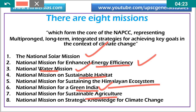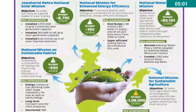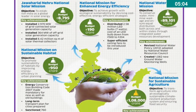If there is an essay topic related to climate change, you can design your essay body based on this structure — eight paragraphs covering strategies and problems — to complete your essay in a meaningful way. This is also the structure for writing your answers in the examination. In the coming videos, each mission will be explained in separate sections, providing comprehensive coverage and valuable information for exam writing.